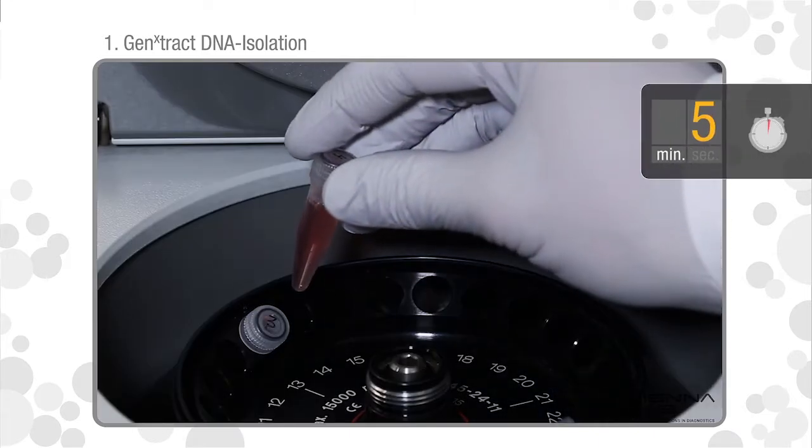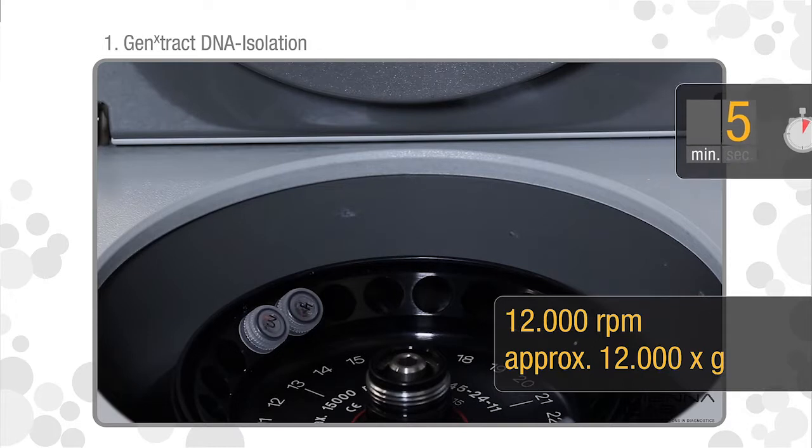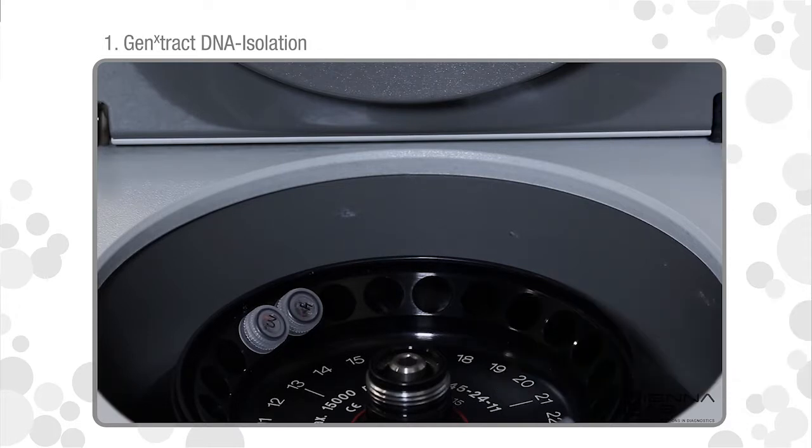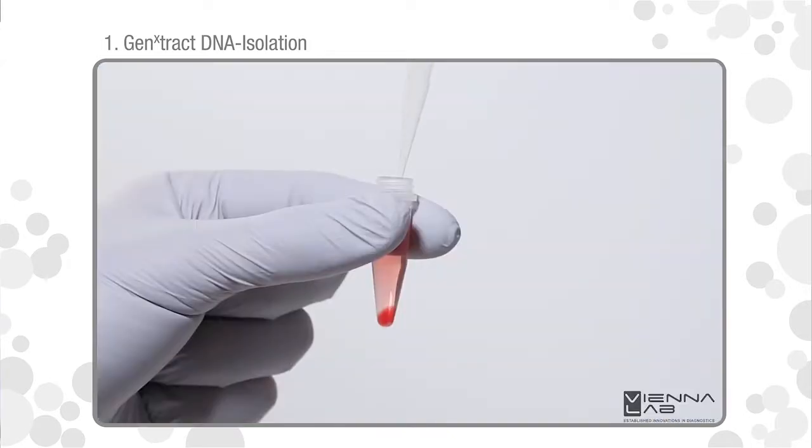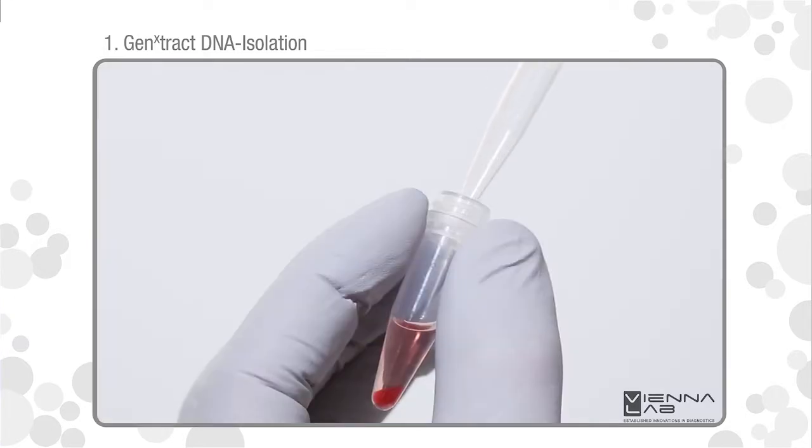Centrifuge for 5 minutes at 12,000 RPM in a micro-centrifuge. Remove and discard the supernatant except for approximately 50 microliters of visible soft pellet.